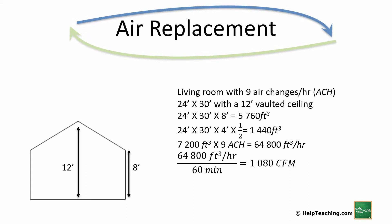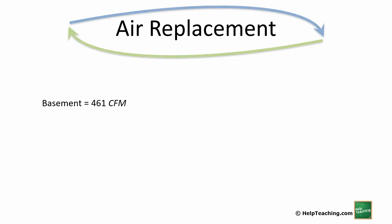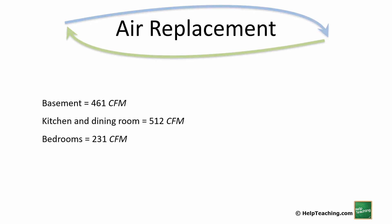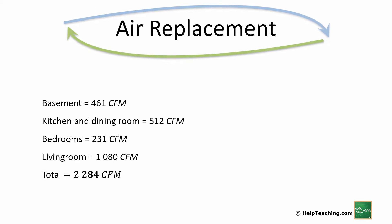Adding all the rooms together: the basement at 461, kitchen and dining room at 512, the bedrooms at 231, and the living room at 1,080 brings us to a total of 2,284 cubic feet per minute.